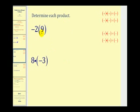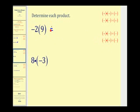Here we have negative two times positive nine. And if the signs are different, the product is negative. Or we can also refer to the rule that says a negative times a positive is negative. Either way, the result is negative eighteen.